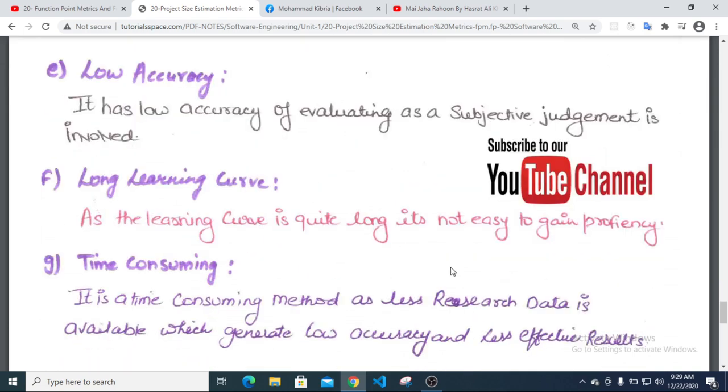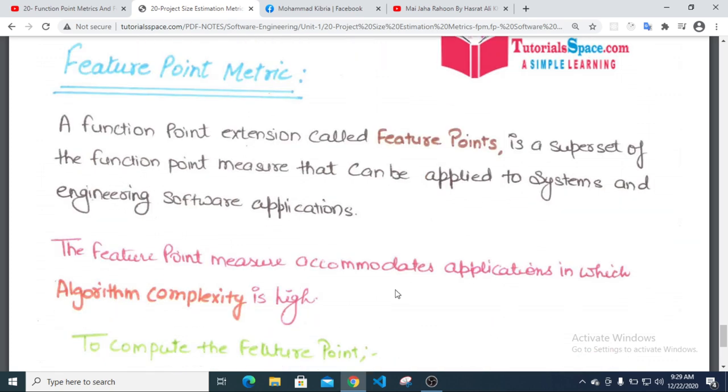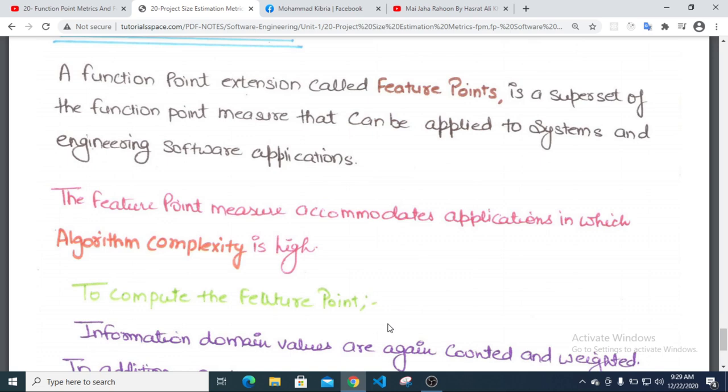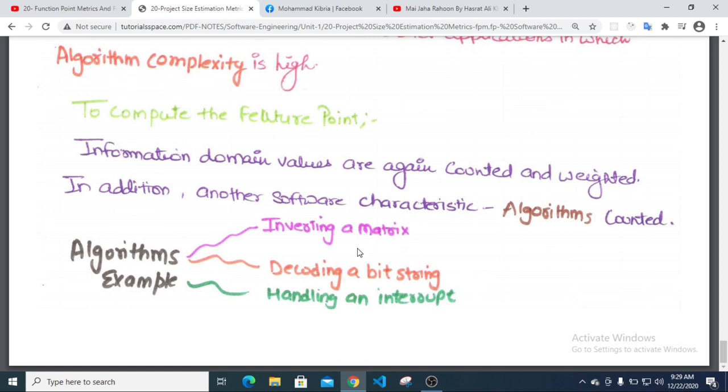Feature Point Metric: The function point estimation method is a superset of the function point measure that can be applied to systems and engineering software applications. The feature point measure accommodates applications in which algorithm complexity is high. The feature point measure includes metrics for algorithms.